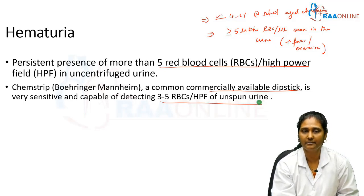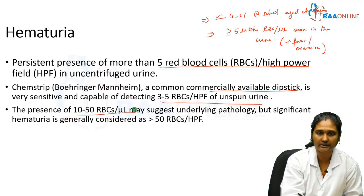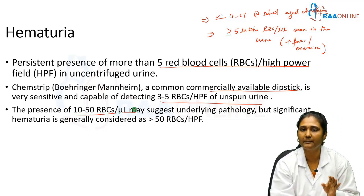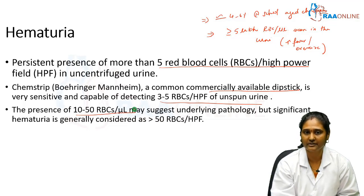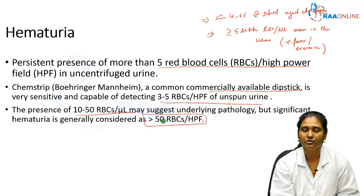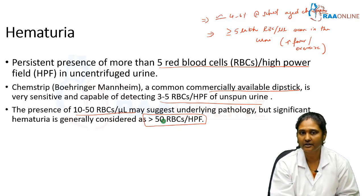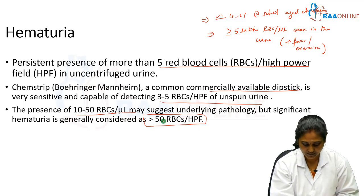Clinically significant hematuria: when RBCs are about 10 to 50 RBCs per microliter, it may suggest underlying pathology. However, it is considered truly clinically significant when it is more than 50 RBCs per high power field. So by definition, hematuria is presence of more than 5 RBCs per high power field, and it becomes clinically significant when it is more than 50 RBCs per high power field.